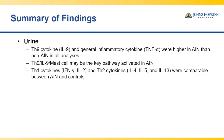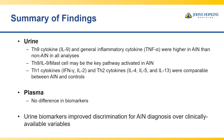In summary, we demonstrated that IL-9, from the TH9 cytokine pathway, and the general inflammatory cytokine TNF-alpha were higher in AIN than non-AIN in all analyses. This suggests that the TH9 cytokine pathway may be a key pathway activated in AIN and warrants further mechanistic study. All other cytokines from TH1 and TH2 pathways were comparable between AIN and controls. Interestingly, this disease appears limited to the kidney, as no plasma biomarkers differed between groups. Overall, urine biomarkers improved discrimination and add clinical utility for this condition.